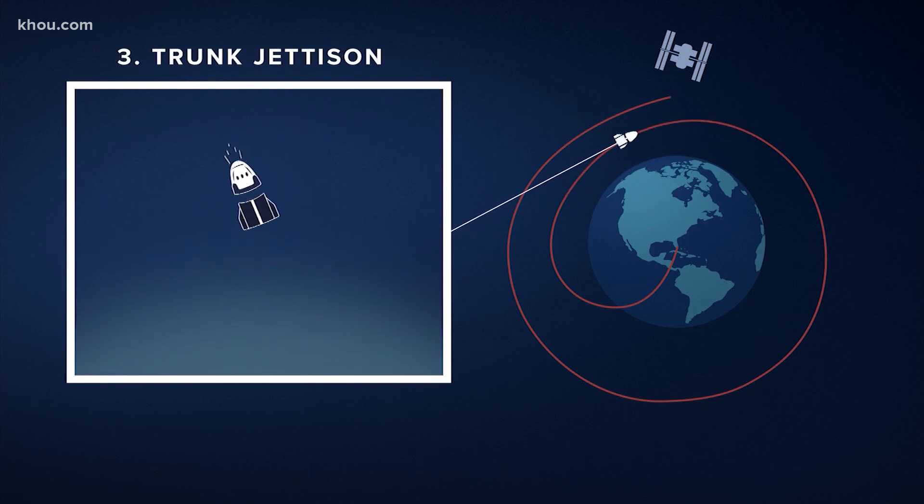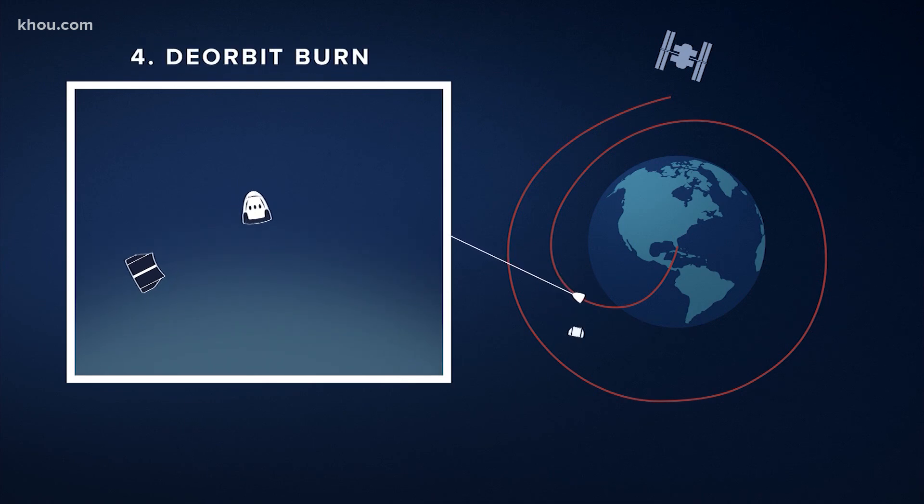As it gets closer to Earth, Dragon will ditch its trunk or service module right before its final deorbit burn. And that's when things get interesting fast.